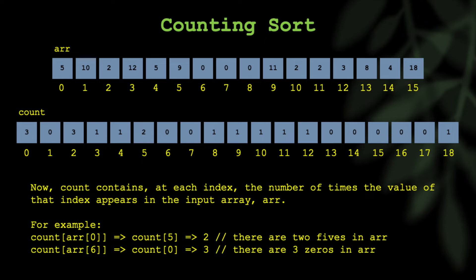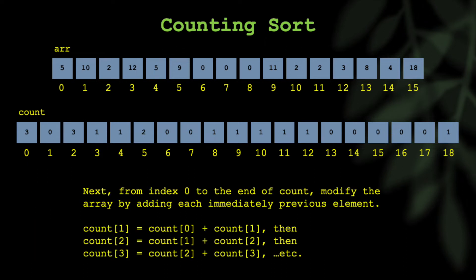Next, you're going to go from index 0 to the end of the count array, and modify that array by adding each immediately previous element. So for example, count[1] will be the sum of count[0] and count[1]. Then you go to count[2], and that becomes the sum of count[1] and count[2], and so on. This is an illustration here. I've highlighted the first two elements, 3 and 0. So count[1] becomes 3, because 3 plus 0 is 3. Next, I have 3 and 3, so count[2] becomes 6. Then I have 6 and 1, so count[3] becomes 7.